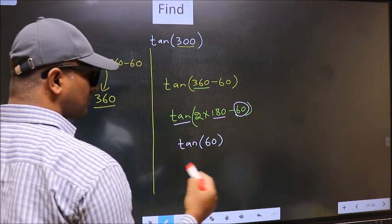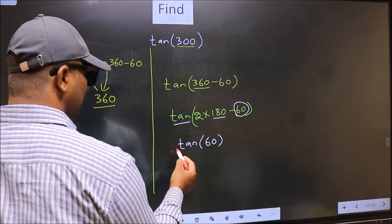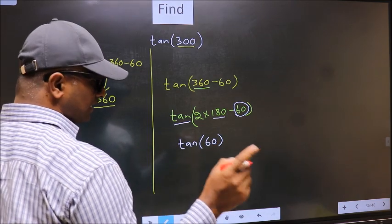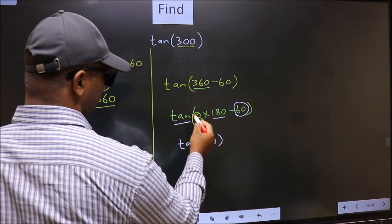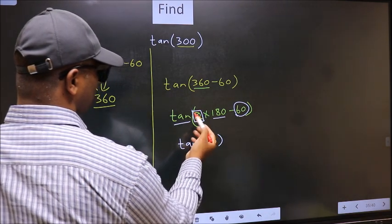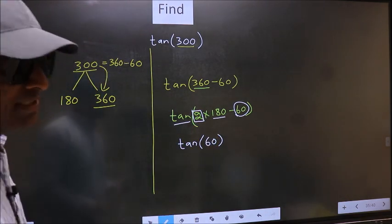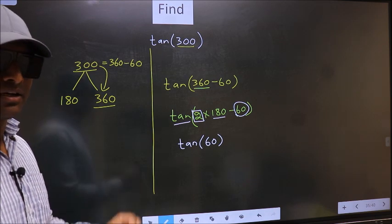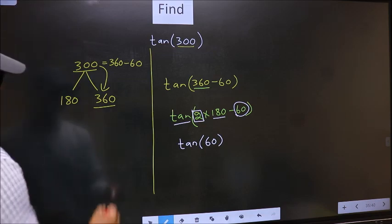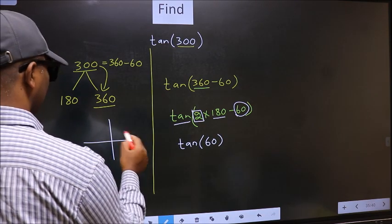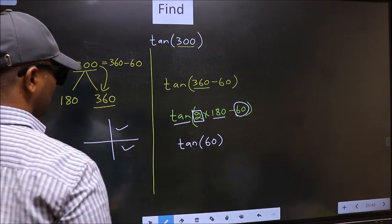Now the question is: will we get here plus or minus? To answer that, we should look at the number before 180—that is 2. And 2 is even, and all the even multiples of 180 lie in either the first or the fourth quadrant.